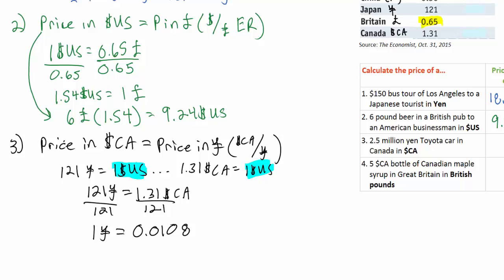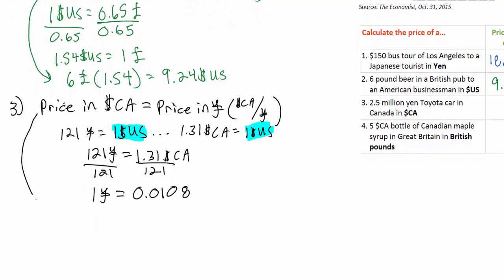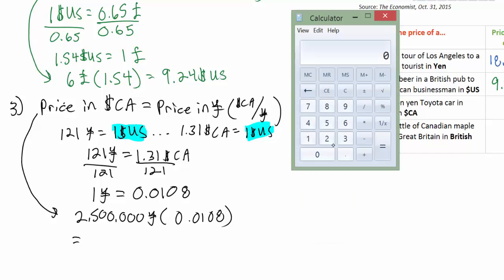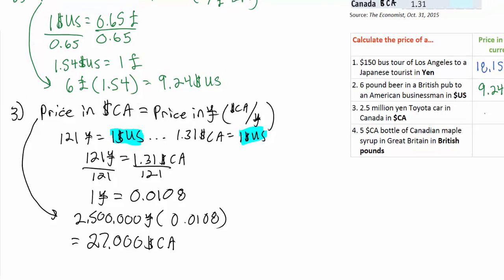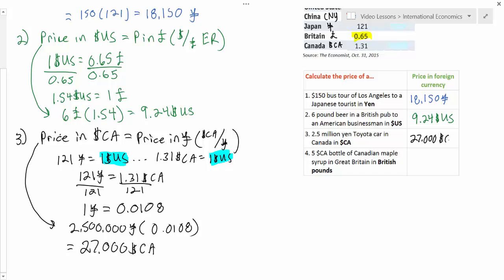Now we can go back to our original problem: the price in Canadian dollars of a 2.5 million yen automobile. We take 2.5 million yen and multiply by 0.0108 Canadian dollars per yen. The result is 27,000 Canadian dollars. So the 2.5 million yen car will cost a Canadian 27,000 Canadian dollars.